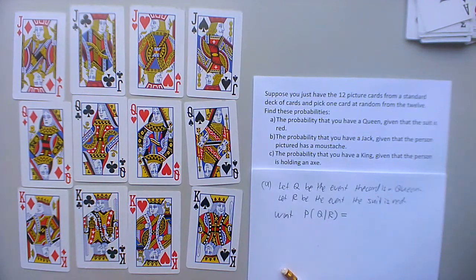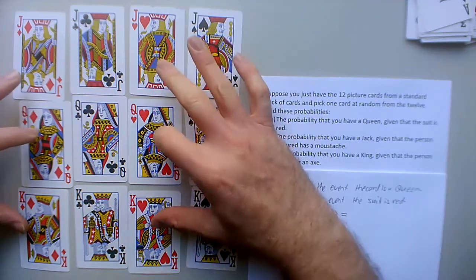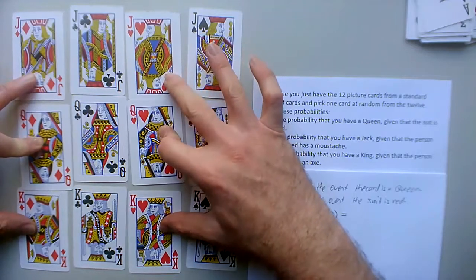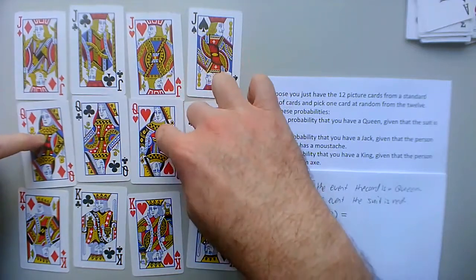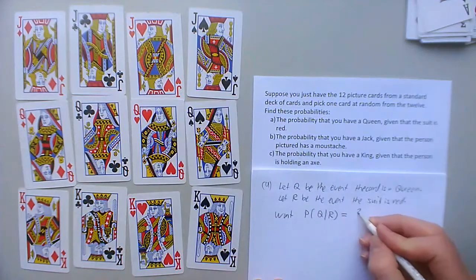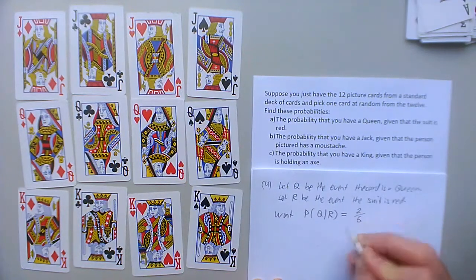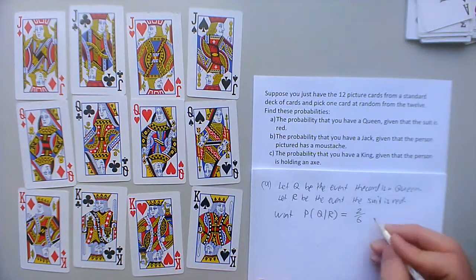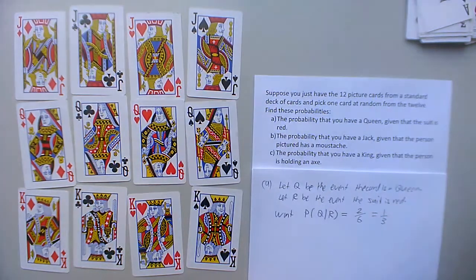And we're only choosing one out of 12 randomly, so they're all the same probability. So all I have to do is count how many of each there are. So there's six red cards, one two three four five six red cards, and out of them two are queens. So it should be two queens out of six red cards total, which is one third. Okay.